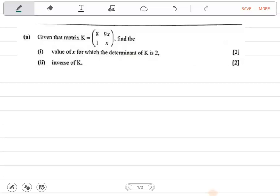Alright, so in this question, how can we answer this question? It's clearly saying, given that the matrix K is given by this: 8, 9, 1, x. Find the value of x for which the determinant is 2 and the inverse of K. So we are going to do this one step by step.